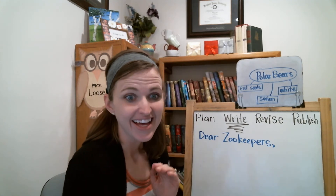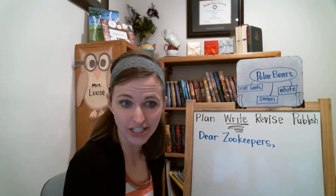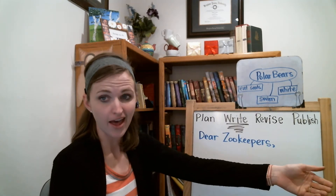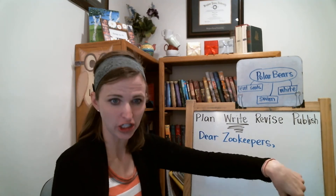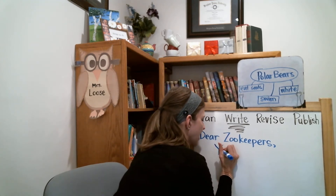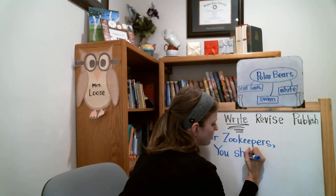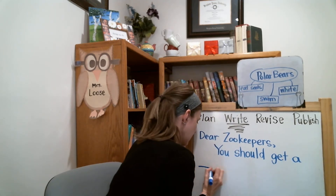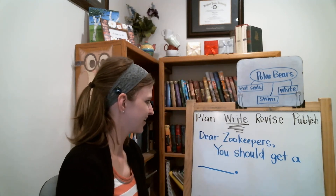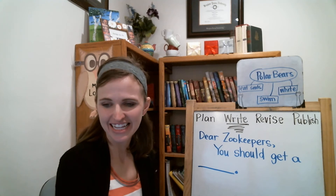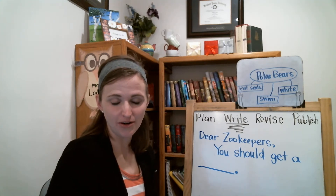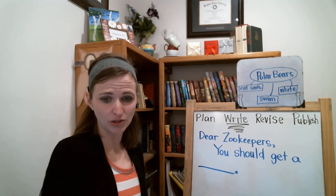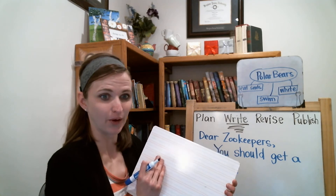Then we're going to write what kind of animal they should get. I'm going to tell them using a word that shows I want them to do something, and that word is 'should.' I'm going to tell them 'you should' — and what do I want them to do? I want them to get an animal. So: 'you should get.' Now we have my opinion — what animal I think they should get. You can copy this part the same but write your actual animal.